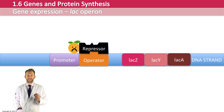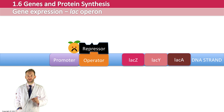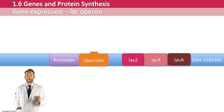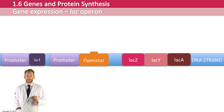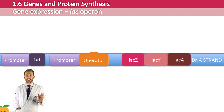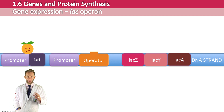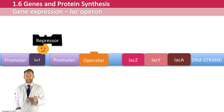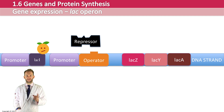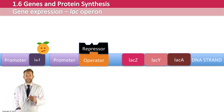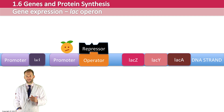The regulator gene that codes for the repressor protein is actually found upstream from the operator, so it is coded for first. This little promoter and gene there makes the repressor, which then goes and binds the operator, and therefore the RNA polymerase can't travel any further.